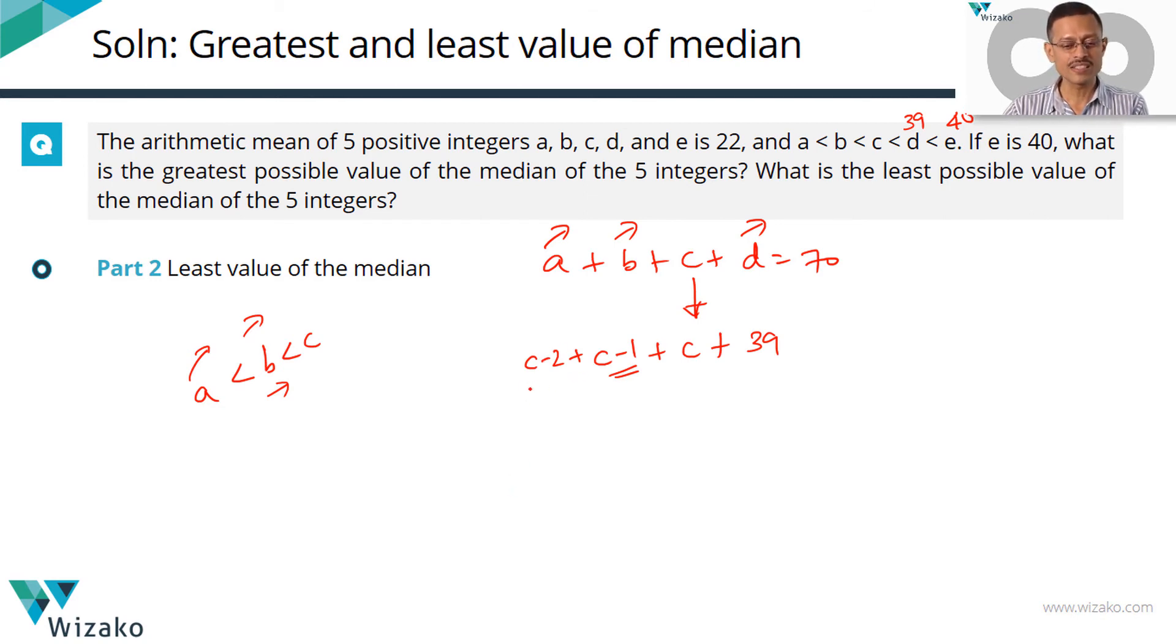Consequently, the max value possible for A is one less than B or two less than C. So C minus two is the maximum value possible for A. C minus one is the maximum value possible for B. We have said the maximum value theoretically possible for D is equal to 39. So let's solve this equation. 3C plus 36 is equal to 70. So this makes 3C equal to 34. C is equal to 34 by 3 which is 11 and one third.